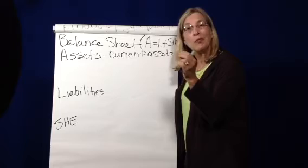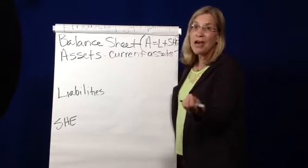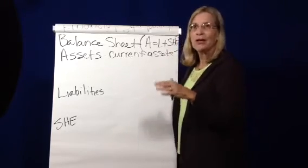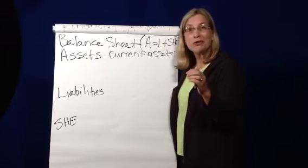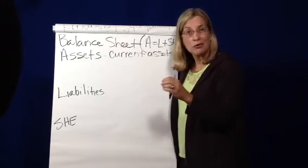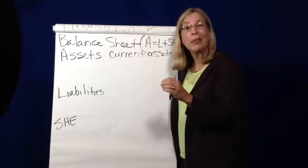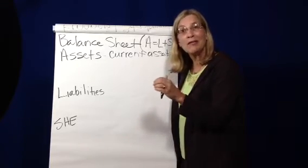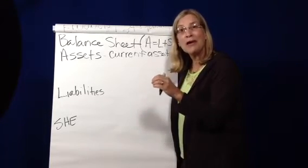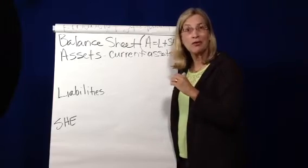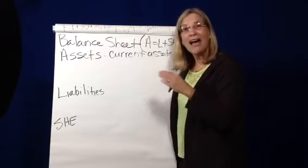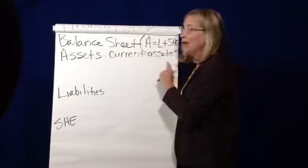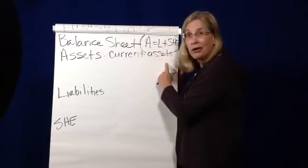Accounts receivable are when customers buy things on credit and say they'll pay you later. So cash, inventory, supplies, accounts receivable, and prepaids are all current asset examples. Prepaids are expenses that you paid for before you've used or consumed them. Those are all kinds of examples of current assets.